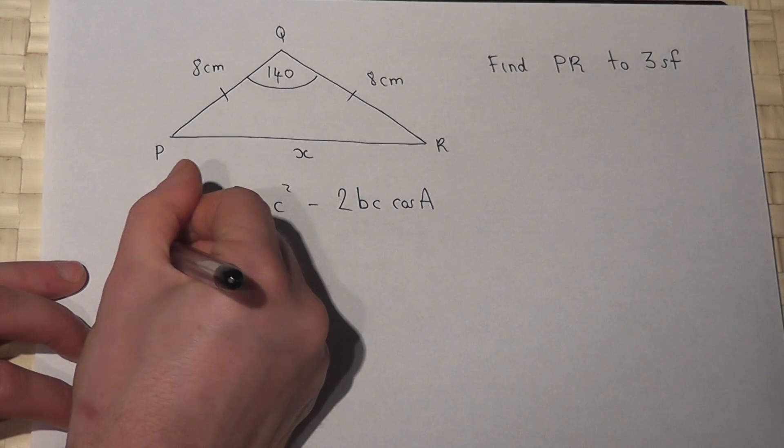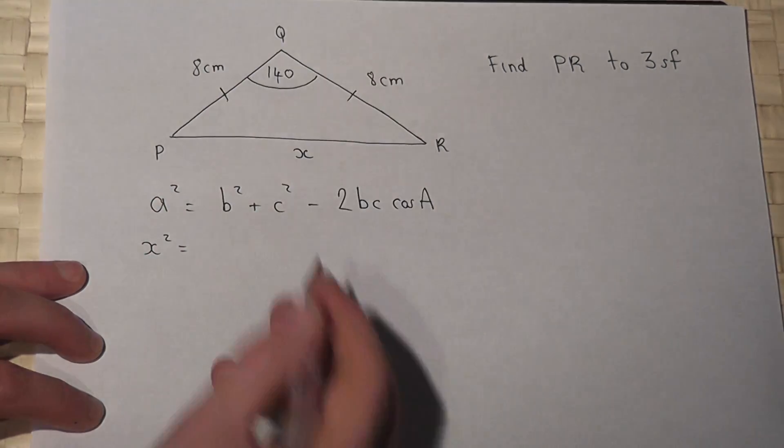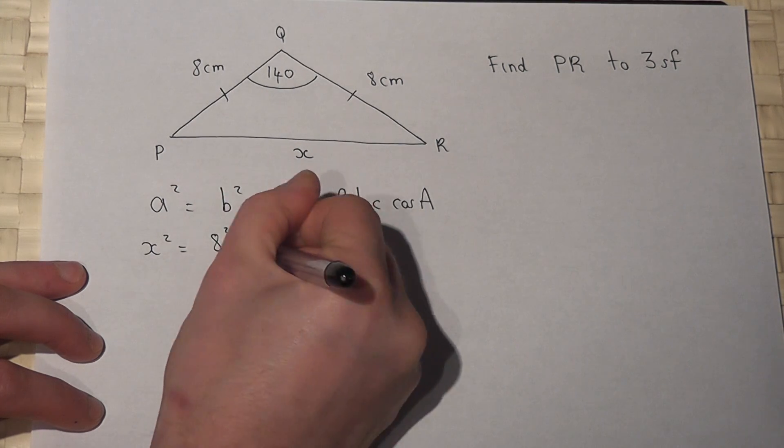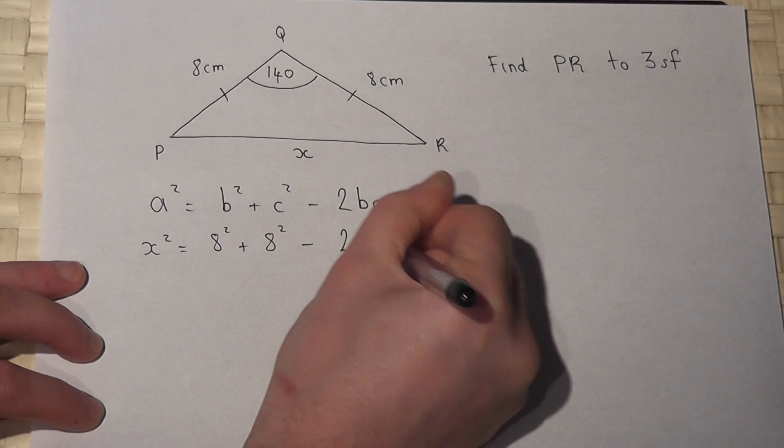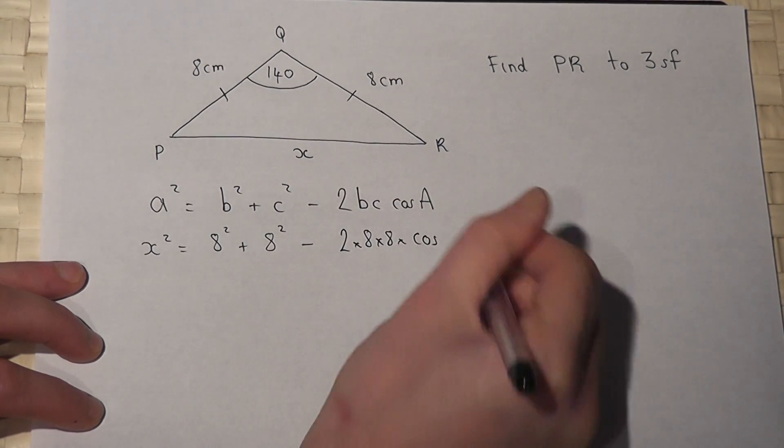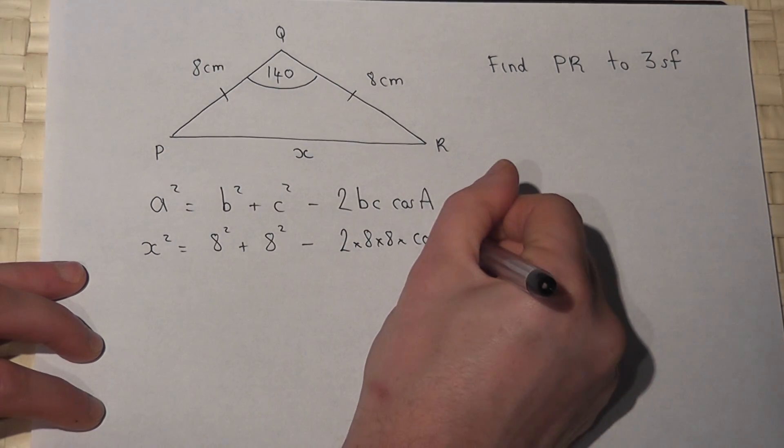So in this case we have x squared equals, these are b and c, the other two sides, so eight squared plus eight squared take away two times eight times eight times cos of the angle opposite the unknown side, in this case 140.